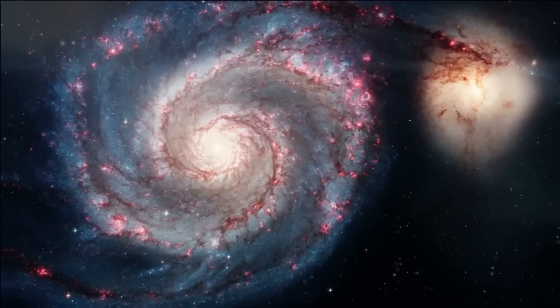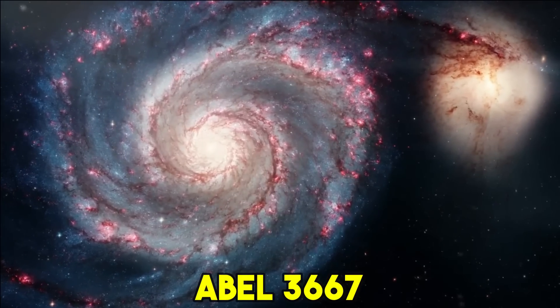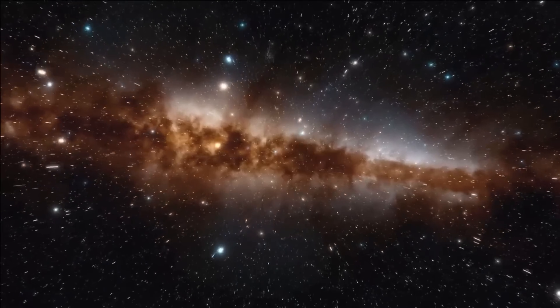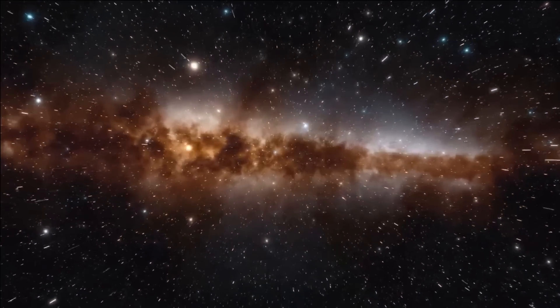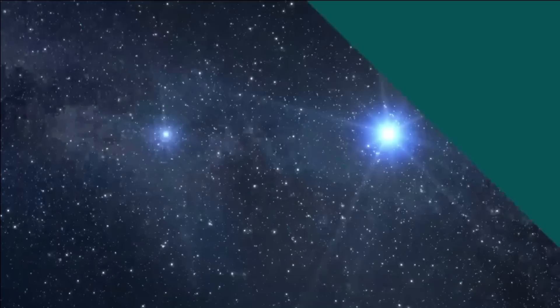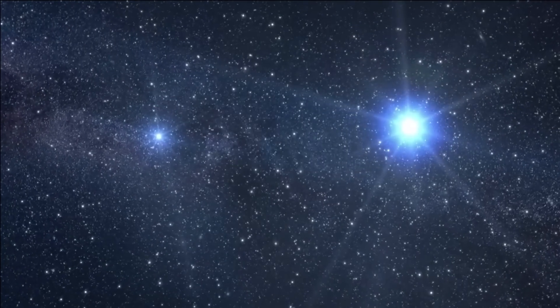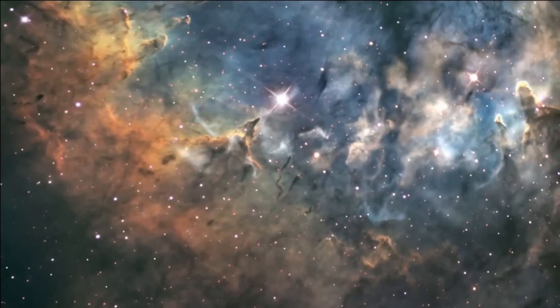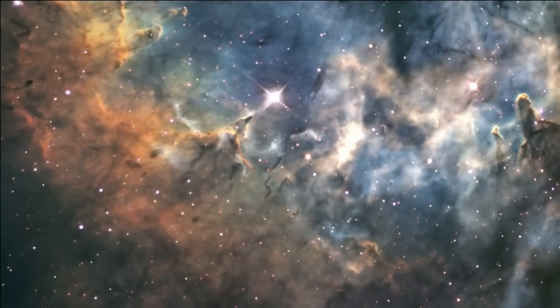Astronomers estimate that the newly formed Abel 3667 is composed of 540 individual galaxies, all of which are represented by the white color at the center of the galaxy's image. Meanwhile, the shockwaves created during the formation of the supercluster are represented by the red colors shown in the image.